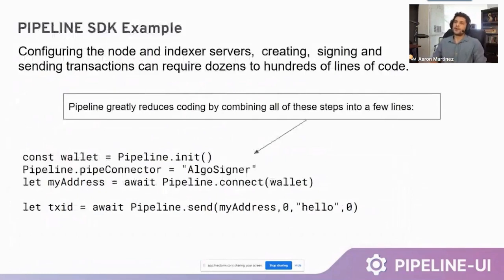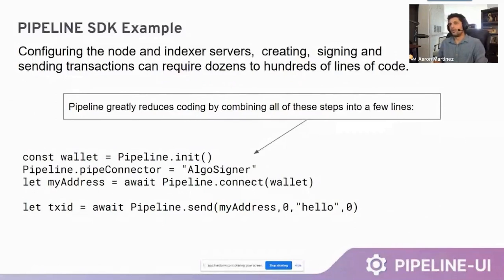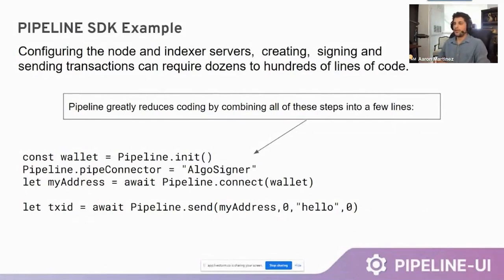Configuring the node and indexer servers, creating, signing, and sending transactions can require dozens to hundreds of lines of code. What we're looking at here is a Pipeline SDK example which is four lines of code that in the Algo SDK by itself could be over a hundred lines of code. By combining and compressing them this way, it makes it so much easier for developers — especially those just getting started — to be able to interact with the SDK.